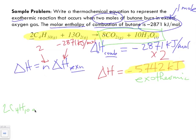2C4H10, and it's a gas reacting with 13 moles of oxygen gas. Remember, don't forget to include the states of matter. To produce 8 moles of carbon dioxide gas, plus 10 moles of water, liquid, and we're going to include plus 5,742 kilojoules.